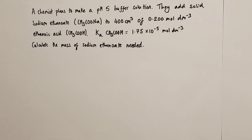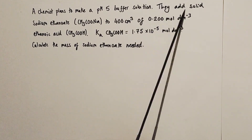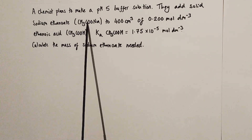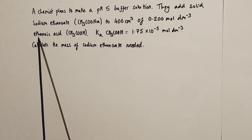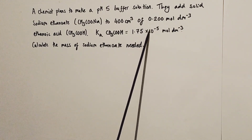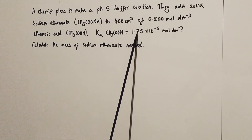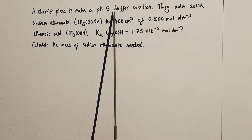Here's the second worked exam-style question. A chemist plans to make a pH 5 buffer solution by adding solid sodium ethanoate to 400 cm³ of 0.2 mol/L ethanoic acid. The Ka of ethanoic acid is given as 1.75 × 10⁻⁵. We're asked to calculate the mass of sodium ethanoate needed to produce a buffer of pH 5.